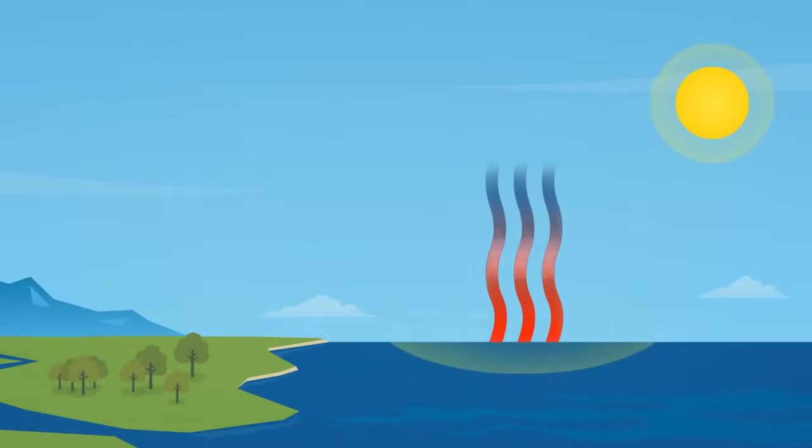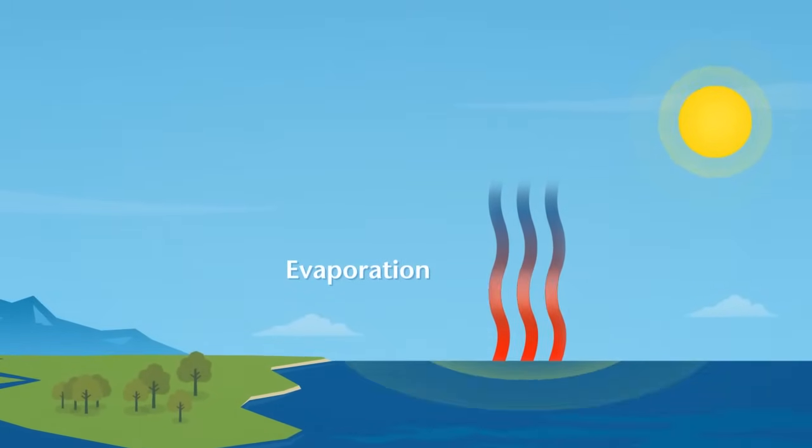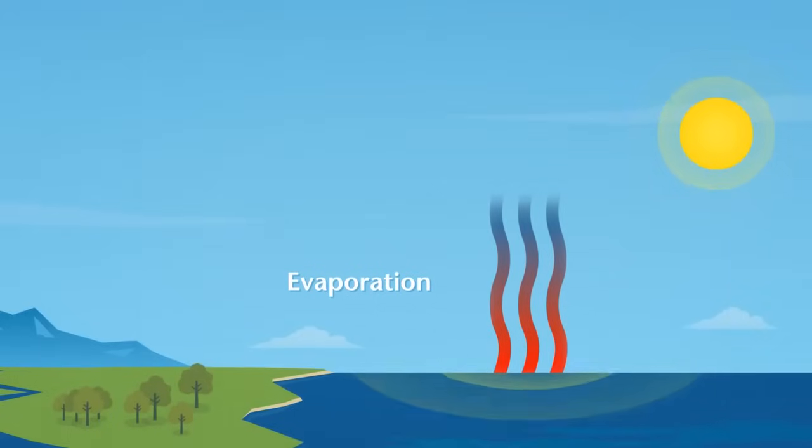This process, the changing of water into a gas, is called evaporation. Because gases are lighter than liquids, water vapor rises up into the sky, and the further you move up and away from the Earth's surface, the colder the temperature gets.